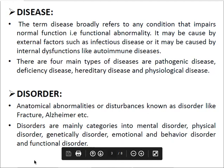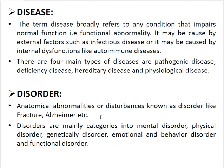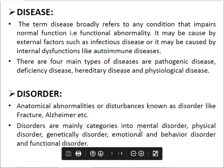An anatomical abnormality or disturbance is known as a disorder — for example, Alzheimer's. Disorder is mainly categorized into mental disorders, physical disorders, genetic disorders, emotional and behavioral disorders, and functional disorders.